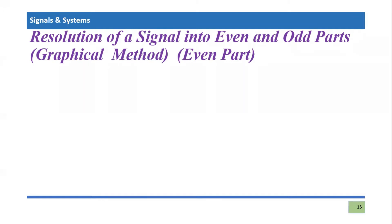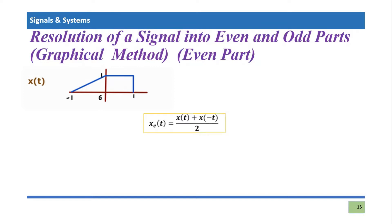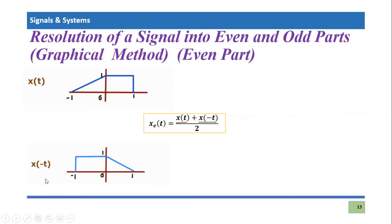Let's consider a signal in graphical form. The equation we used in the last tutorial was: x_e(t) — the signal's even part — is basically the composition of x(t) plus x(-t), divided by two. And x(-t) means its time reversal. So we need to time reverse this signal. The time reversal of x(t) is simply x(-t), as indicated here, and this is the graph of that signal.